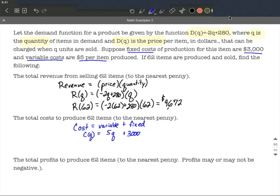To calculate what our costs are going to be for 62 items, we're going to evaluate this at 62. So that goes in for our quantity. We have 5 times 62 plus $3,000, which I got to work out to be $3,310 in this example.